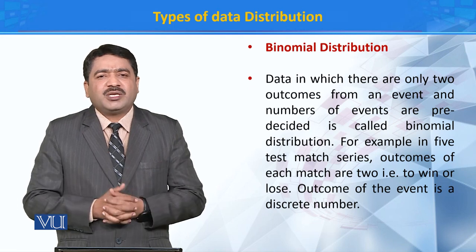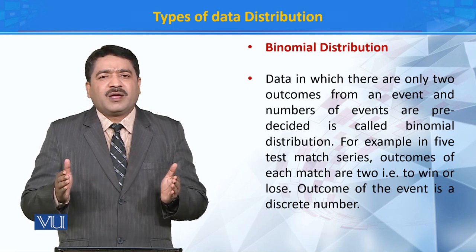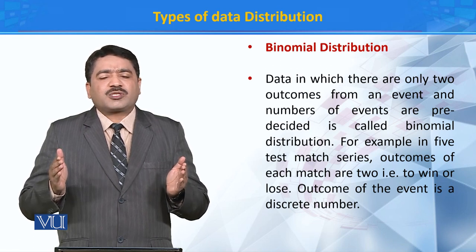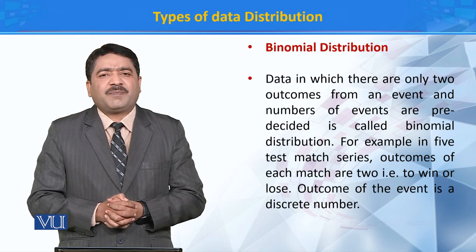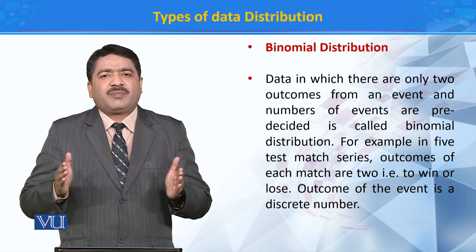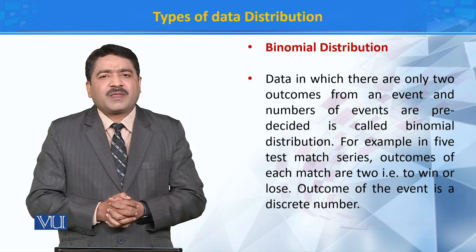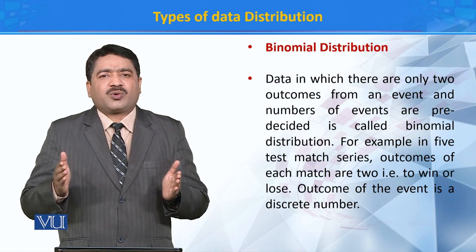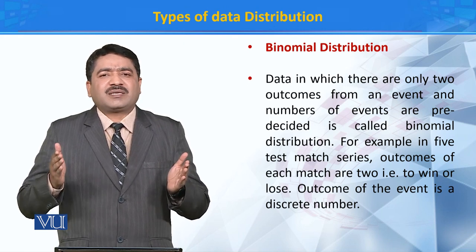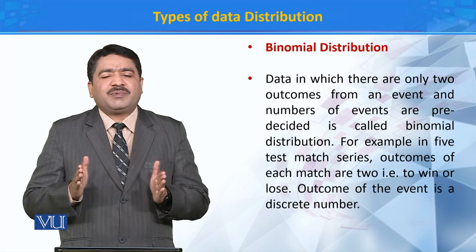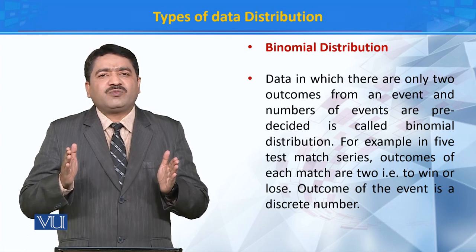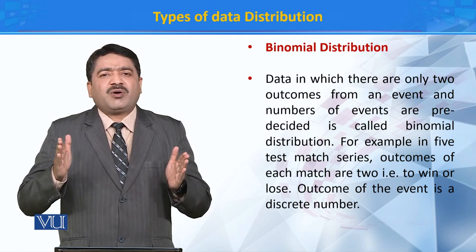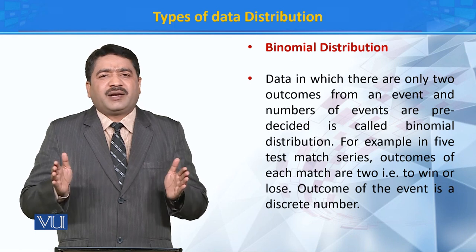दूसरी type of data distribution binomial distribution है. Binomial data ऐसा data होता है जिसकी दो possible outcomes होती हैं. For example, अगर हम 5 matchों की एक series खेलते हैं तो उसमें हर match का outcome या तो कोई team match जीतती है या फिर match हार जाती है. तो हर event के दो possible outcomes हैं. यहां पे जो number of events होते हैं ये पहले سے decided हैं.